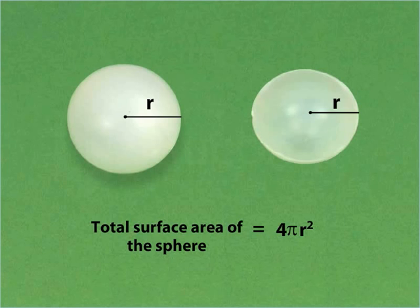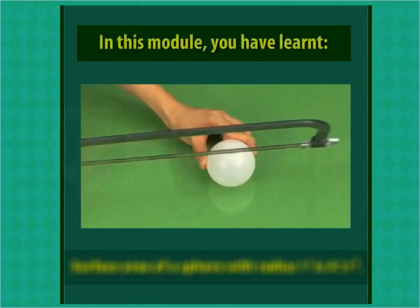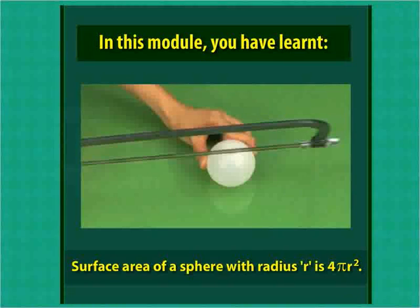This is the formula for the surface area of a sphere. In this module, you have learned that the surface area of a sphere with radius R is 4πR².